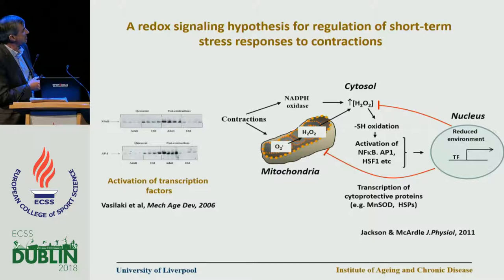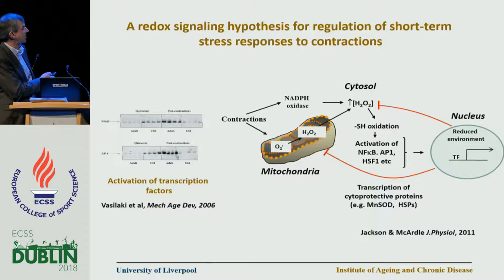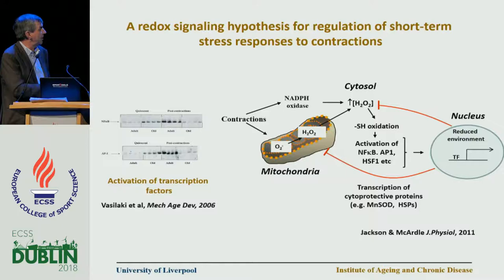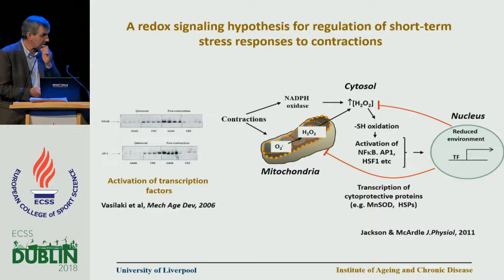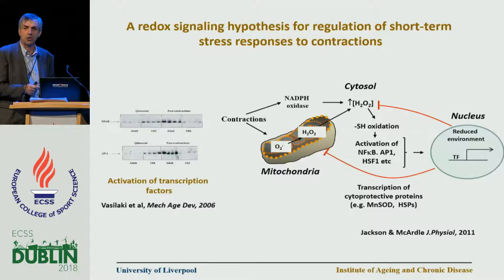How do we get activation of these transcription factors? Back in 2011, Anne McArdle and I generated an initial look at what might be happening. Our hypothesis was that NADPH oxidase increases the cytosolic peroxide level, and then via some mechanism involving oxidation of thiol groups we would see activation of NF-κB, AP-1, and so on. This would then lead to transcription of cytoprotective proteins feeding back and potentially protecting the cell against oxidative damage — though the middle section remains something of a black box.